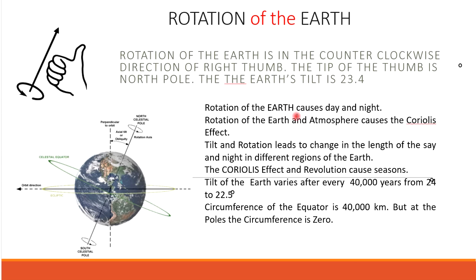Due to rotation, the portion that has light has day and the portion without light has night. The rotation of the Earth and atmosphere creates the Coriolis effect.